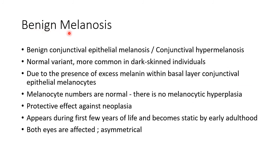Benign melanosis, also known as benign conjunctival epithelial melanosis or conjunctival hypermelanosis, is a normal variant more common in dark-skinned individuals. It occurs due to excess melanin within basal layer conjunctival epithelial melanocytes, with normal melanocyte numbers and no melanocytic hyperplasia. It has a protective effect against neoplasia, appears in the first few years of life, becomes static by early adulthood, and affects both eyes, sometimes asymmetrically.